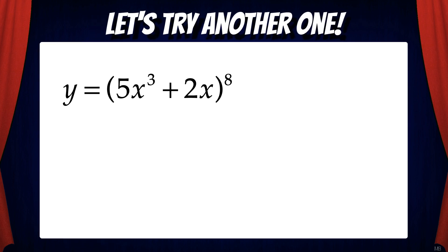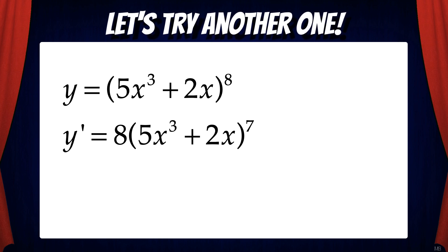Let's try another example. Suppose y equals the quantity of 5x cubed plus 2x to the 8th power. When we apply the chain rule, we first take the derivative of the outside function. That gives us 8 times the quantity of something to the 7th power — and that something is just the inner function, so we fill that in: 8 times the quantity of 5x cubed plus 2x to the 7th power. Now we multiply by the derivative of the inside function, which is 15x squared plus 2.